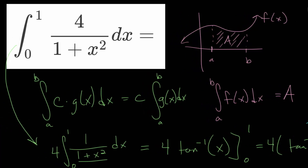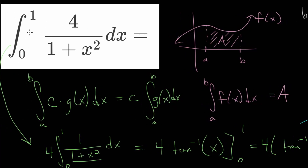What we found is that the area underneath this curve between x values of 0 and 1, bounded by the x-axis, is equal to pi. This might not be a very satisfying explanation since you just need to know that this function has an antiderivative that is the inverse tangent function. If you weren't aware of this, you'll need a different approach. You can prove it yourself: start with the inverse tangent, take its derivative, and show that it equals 1 over 1 plus x squared.